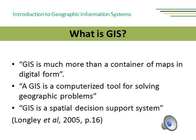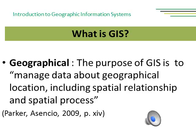There are many definitions of GIS. Different groups of people, for example, the general public or the scientists, can find a different definition more useful than another. Longley in 2005 defined GIS as more than a container of maps in digital form, and GIS is a computerized tool for solving geographic problems, as well as a special decision support system. In GIS, the G stands for geographical. Parker and Asensio say that the purpose of GIS is to manage data about geographical location, including spatial relationship and spatial process.